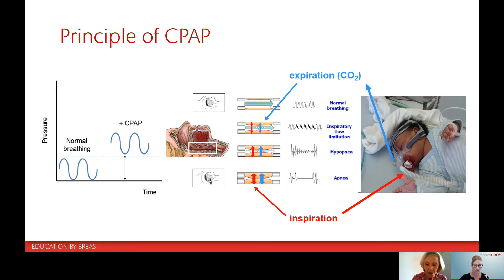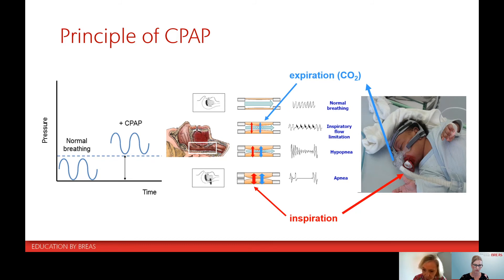The aim of CPAP is to open the airway by delivering a constant pressure through the entire breathing cycle. You can see on the figure on the left normal breathing, and here the normal breathing of a child above a certain positive airway pressure which is necessary to maintain the airways open. It is a very simple mode of ventilation with a constant airflow and a calibrated leak to allow the exhalation of expired carbon dioxide during expiration.